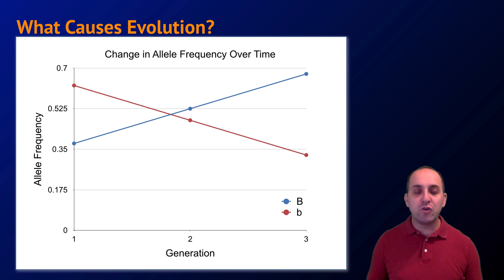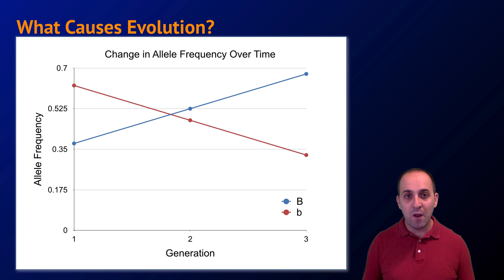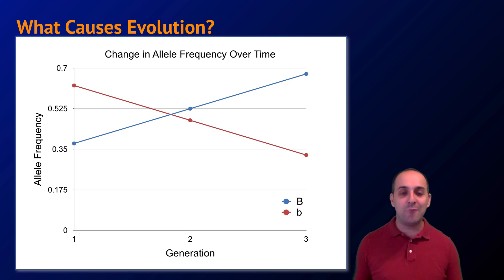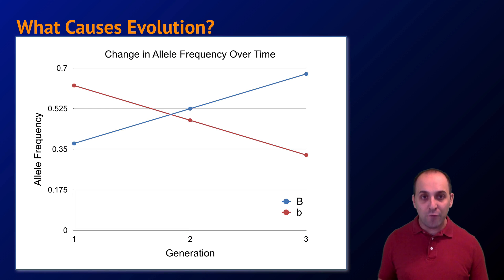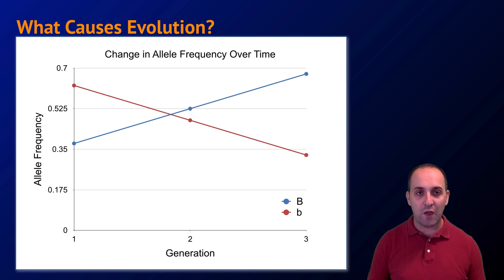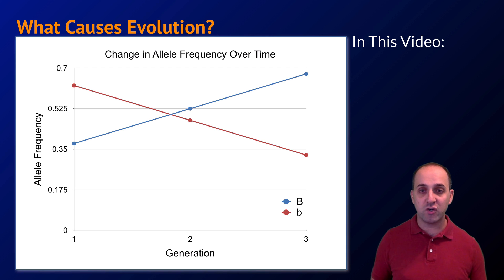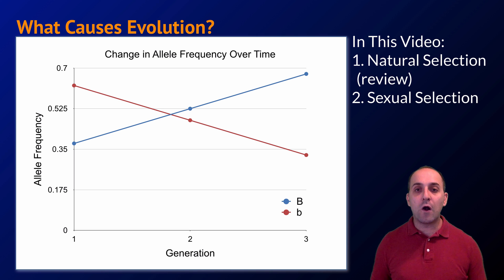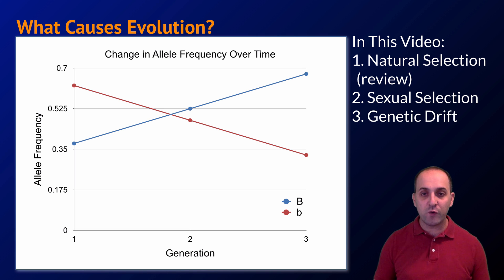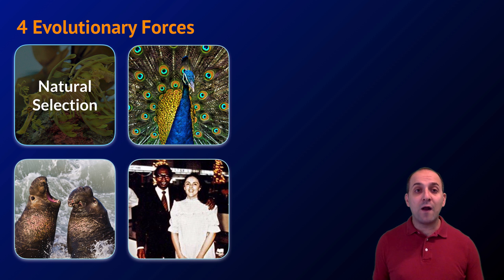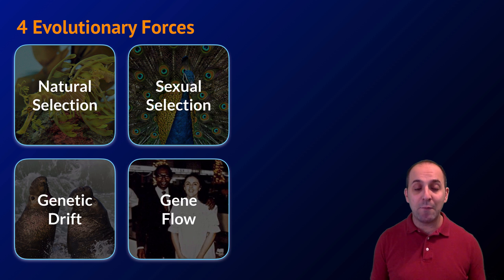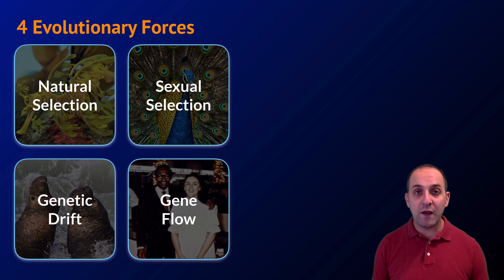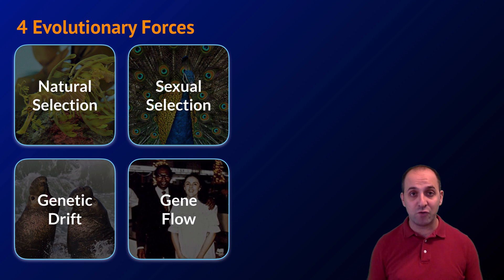We've already learned that evolution is defined as a change in allele frequencies over time. One thing we haven't explicitly discussed is that this definition allows for forces other than just natural selection to drive the evolution of a population. We'll review natural selection briefly, talk about sexual selection, genetic drift, and gene flow — the four evolutionary forces you need to be familiar with in this course.